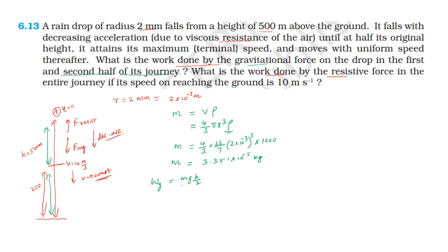So the mass is equal to 10 to the power minus 5, G is equal to 9.8, and H is equal to 500 divided by 2, which is 250 metres. Now we simplify this answer.